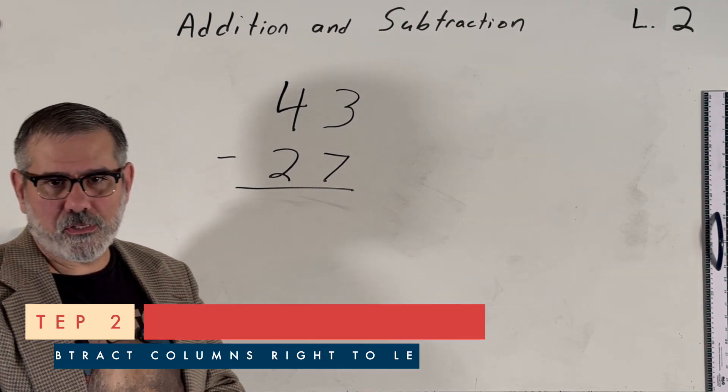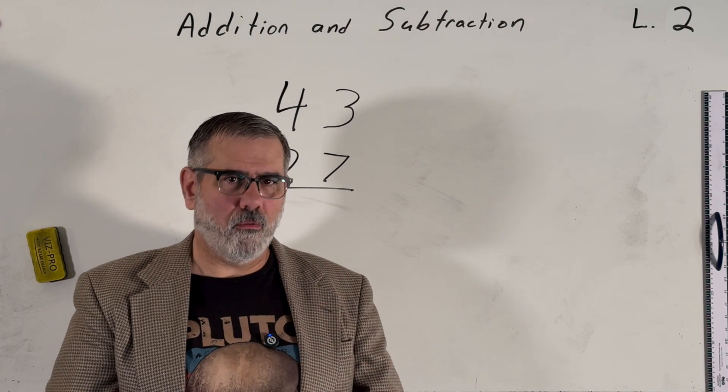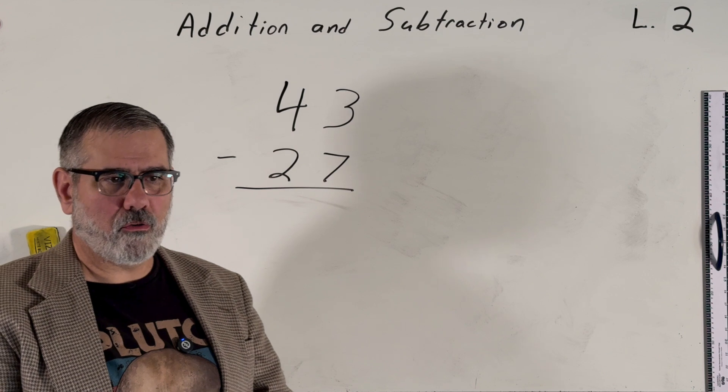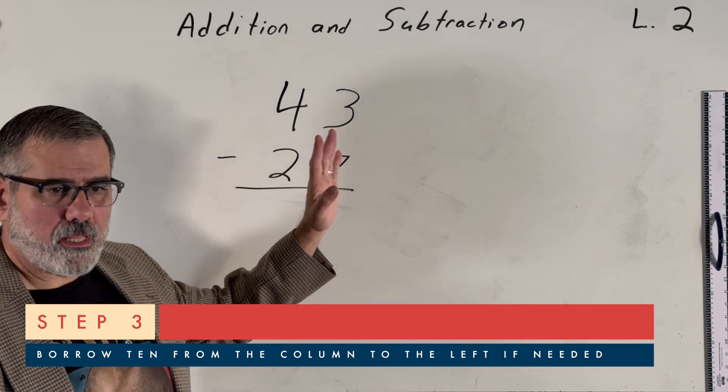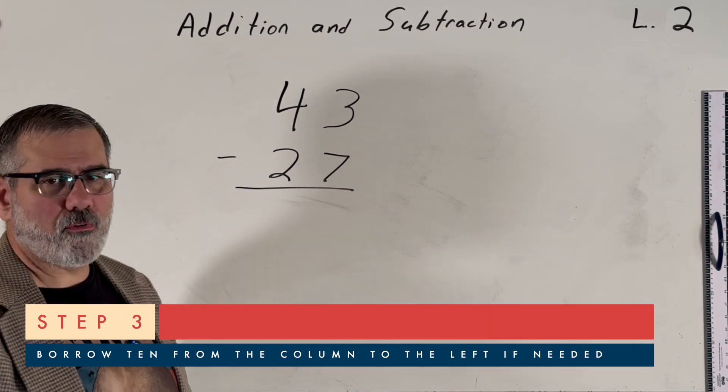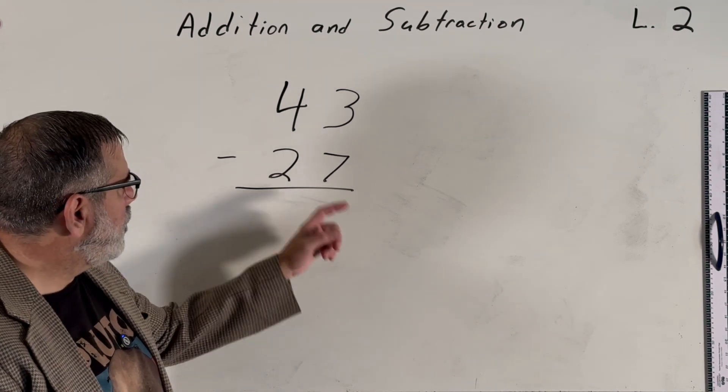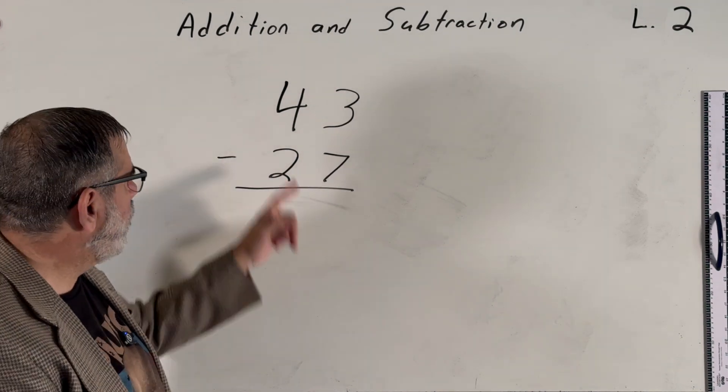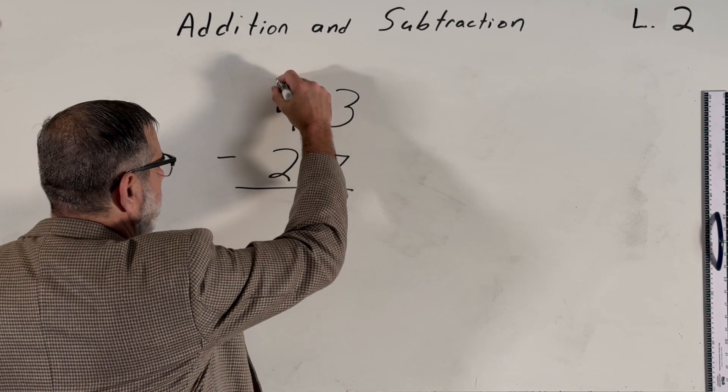Well, we can't do 3 minus 7. If we have 3 apples and we try to take away 7 apples, what do we do? We're going to do something very similar to what we did with our carrying when we did addition. We're going to do something called borrowing. Because we only have 3 ones, let's imagine this is money again. We only have 3 ones. We've got to take away 7 ones. Well, we can't take away 7 ones from 3 ones. So what we're going to do instead is we're going to borrow, because we've got 4 tens, right?